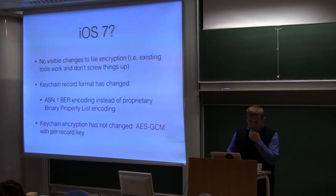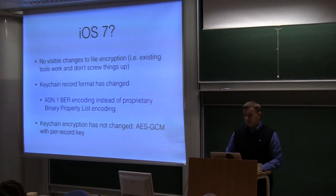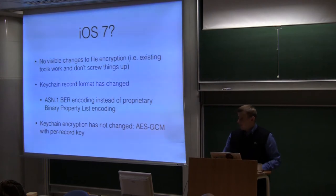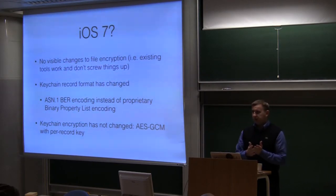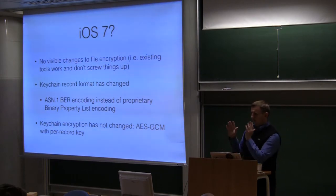So what's new with iOS 7? For storage encryption, I haven't seen anything noticeable — existing tools continue to work and everything decrypts fine. However, Apple is now encouraging developers to use protection classes by making the most restrictive protection class the default. This is actually a serious problem in practice. My own application was writing to a log file and also performing background tasks. On the development device everything was fine, but on the production device which had a passcode, it crashed.